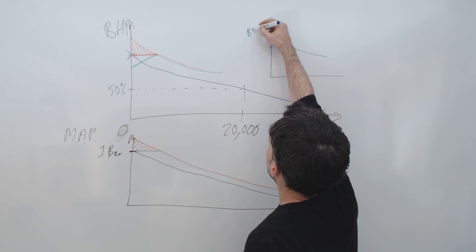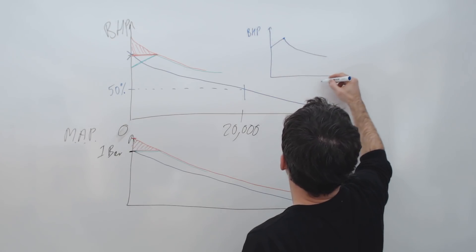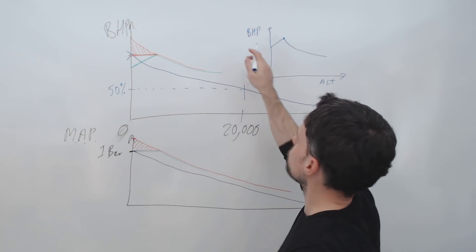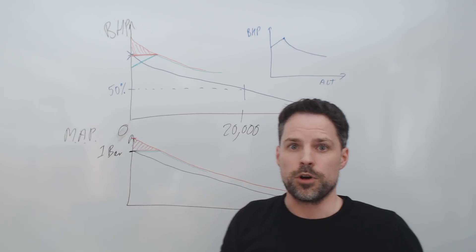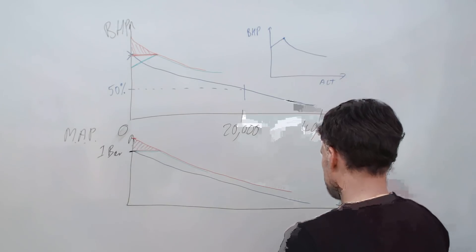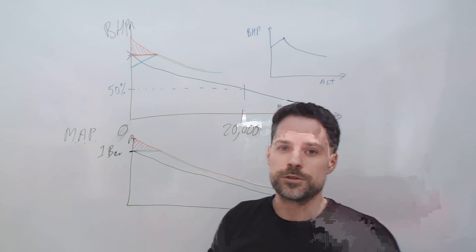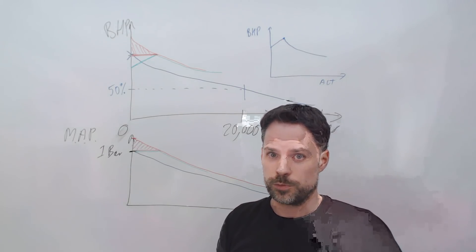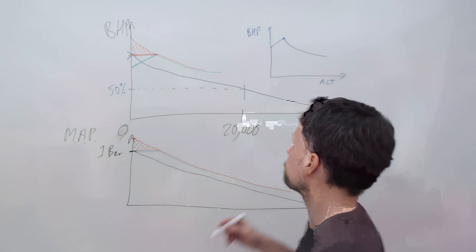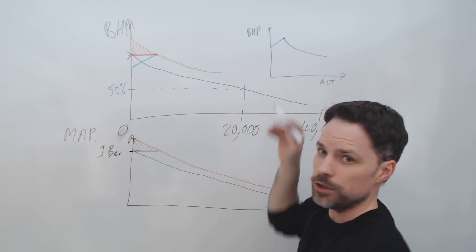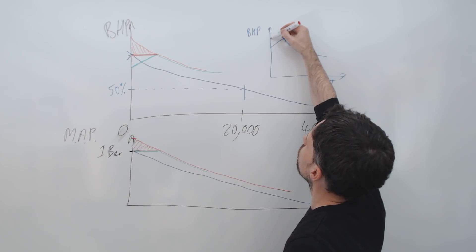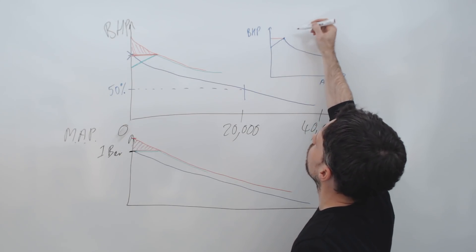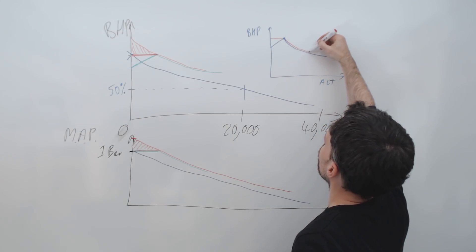So horsepower altitude. This is obviously in the Mark 1 Spitfire. So a DB601, which would be in the Messerschmitt 109, for example, its power graph does not look like this. It actually is going to be something approximately like that, and then it will also fall off in the same way.